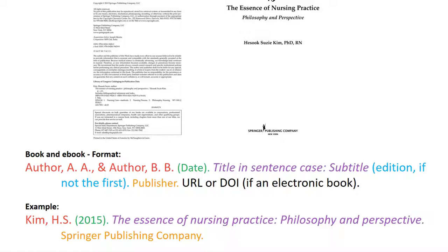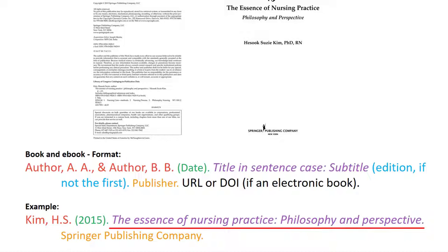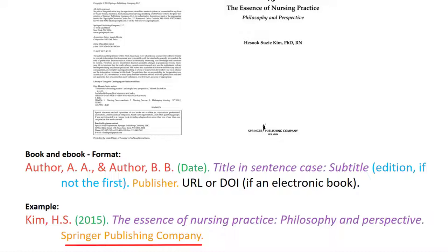a DOI or URL to the book. In this example we can see the book is written by Kim in 2015. The title of the book in italics and in sentence case is 'The Essence of Nursing Practice: Philosophy and Perspective'. This is the first edition so we don't need an actual edition number for this book, and it was published by the Springer Publishing Company.